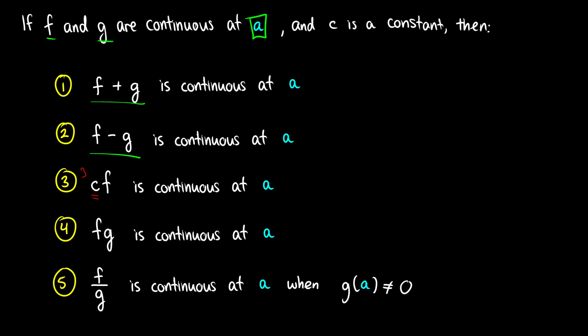If two functions are multiplied together and both are continuous, then f times g will be continuous at a — sort of like scaling except the scale is variable, so some points might be scaled by 2, others by 4, and so on. We also have that f over g is continuous at a, with the restriction that g of a cannot equal zero, because otherwise we would be dividing by zero.